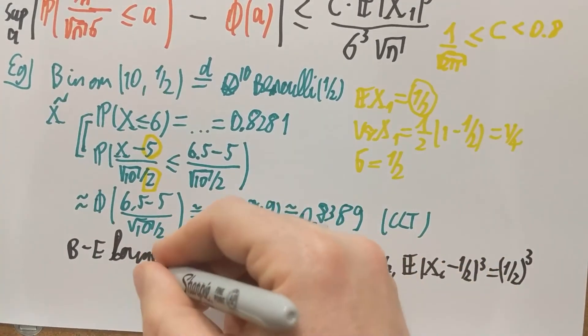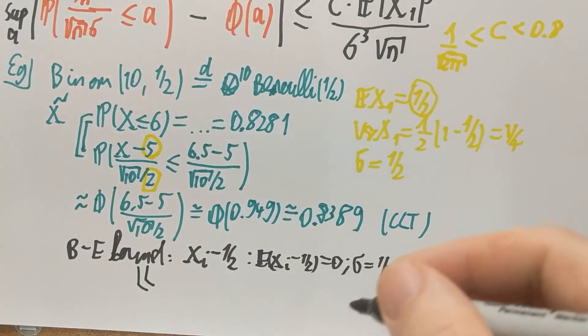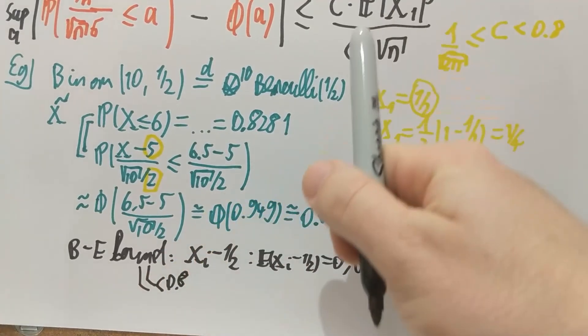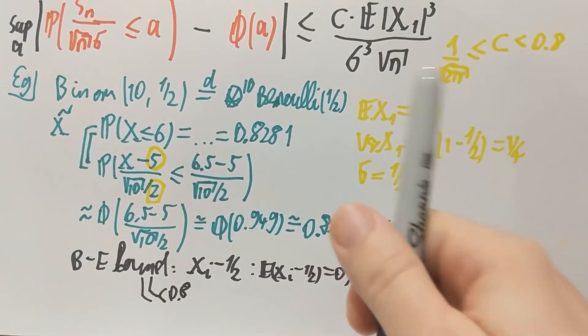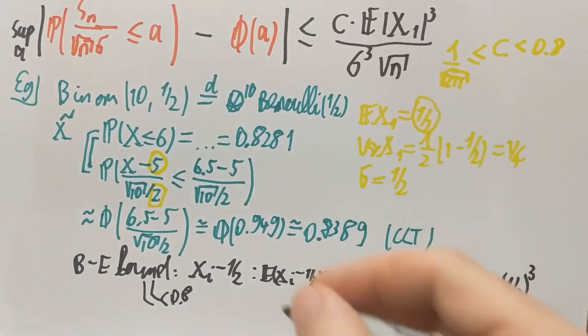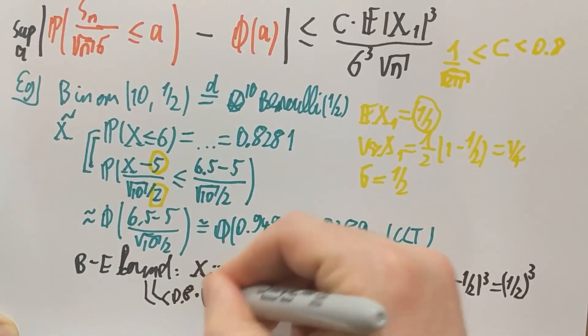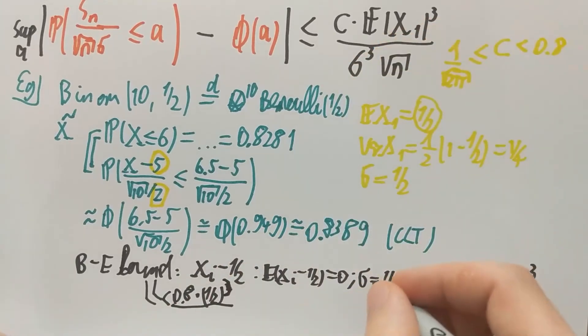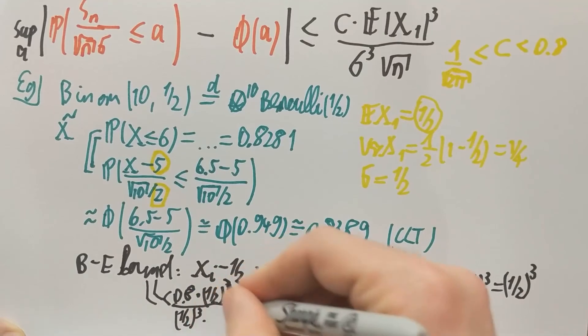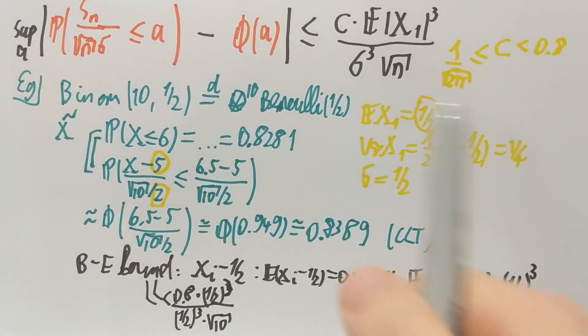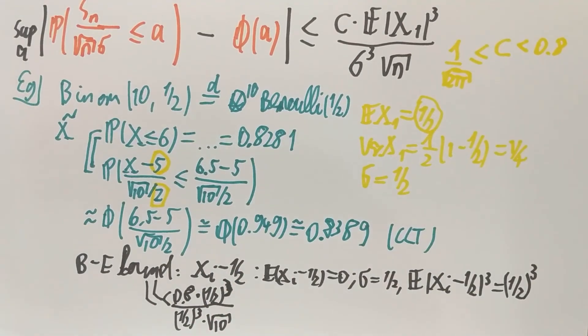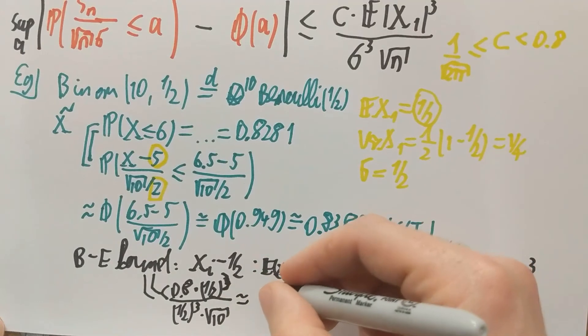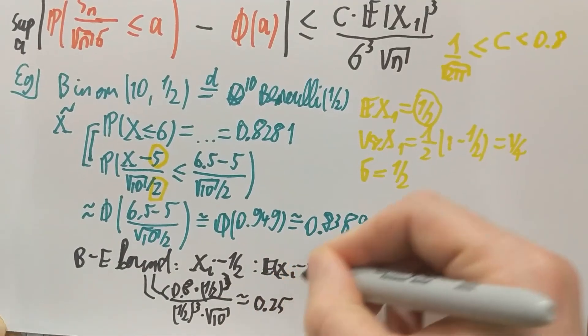And so the Berry-Esseen bound, what we see on the right-hand side of the Berry-Esseen theorem, is that this constant, which we know is smaller than 0.8, so the bound is actually smaller than 0.8 for the constant C, then this one eighth for the one half cubed for the third moment, divided by sigma cubed, which is again one half cubed, and root n, which is root of 10, because we have the tenfold convolution of these Bernoullis. And if you calculate all of that, it's quite easy to do, the one half cubed actually cancel, we just need to take square root of 10, and so on, calculate it, and you get approximately 0.25. That's the Berry-Esseen bound.